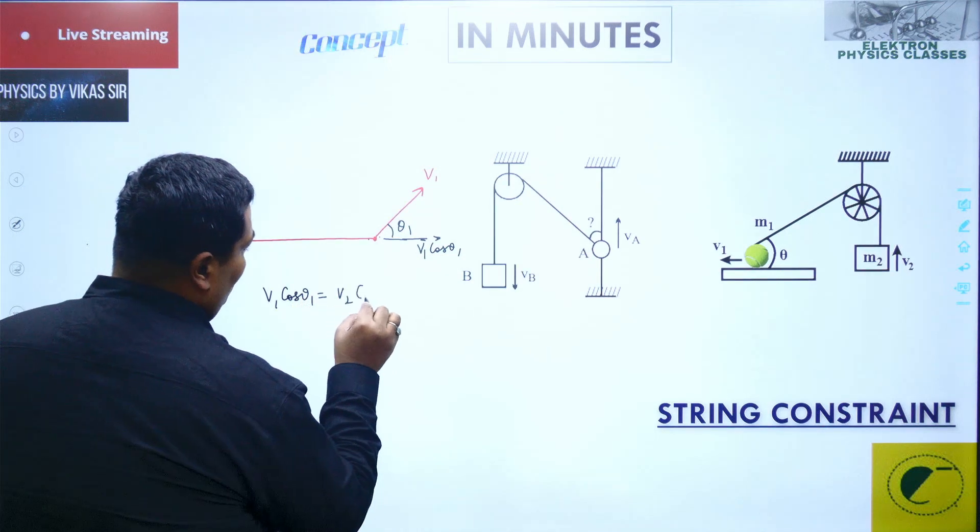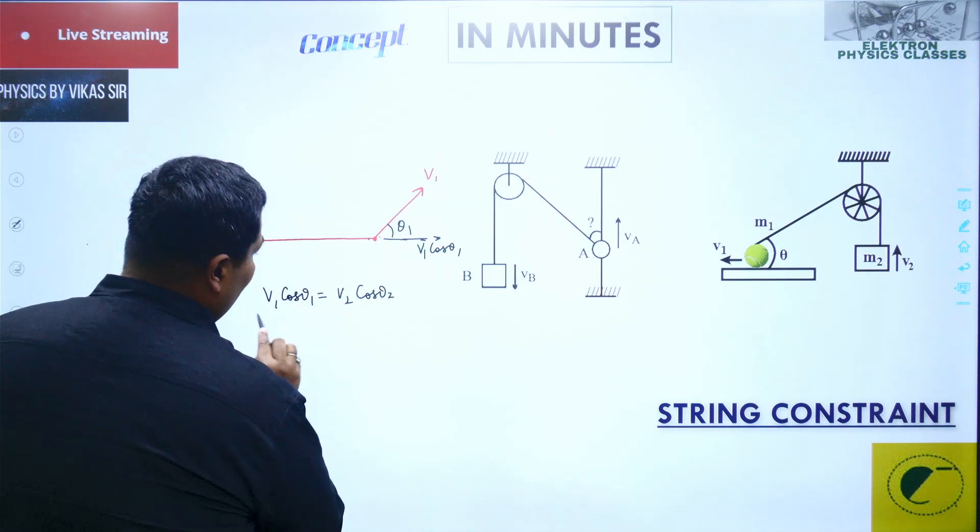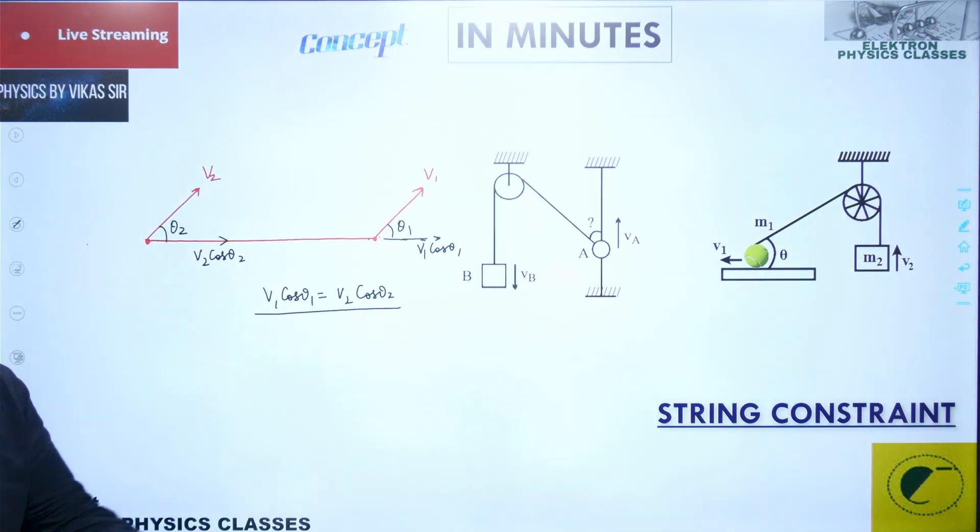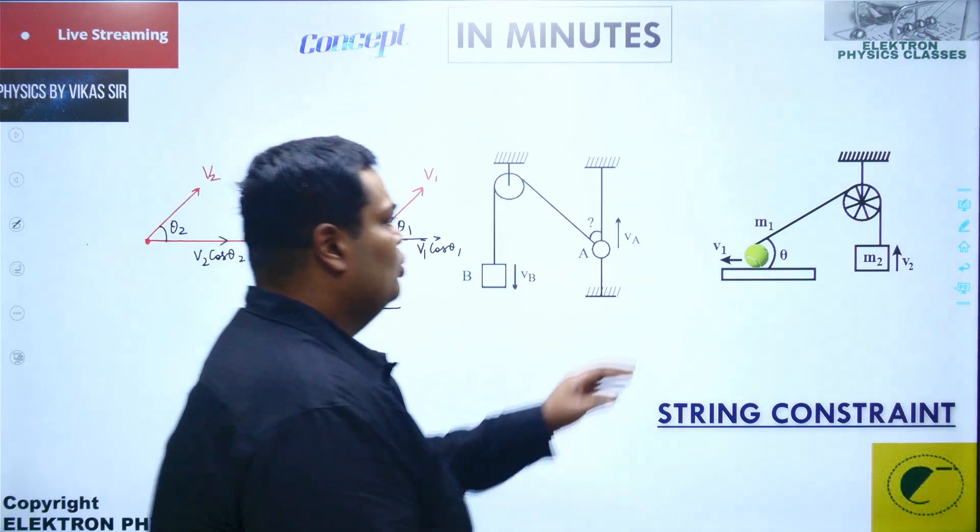should be equal to v2 cos theta 2. This condition is known as the string constraint. And how do we use it in the question? For that I have two examples for you right now. Over here, look at this